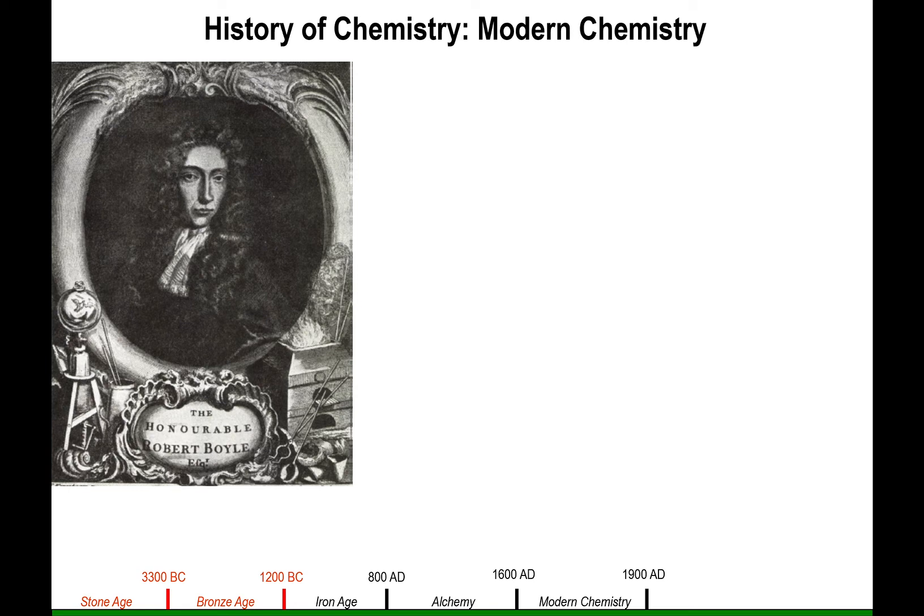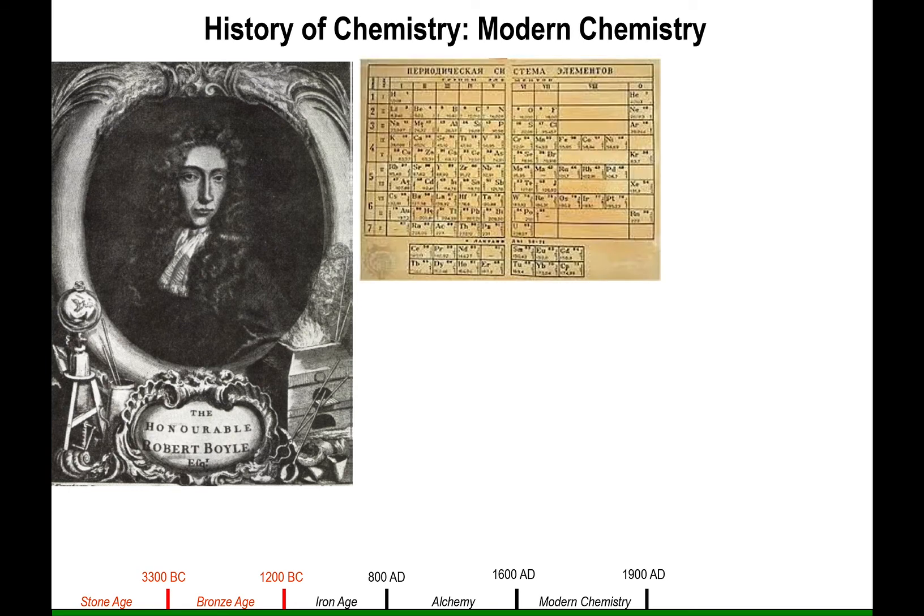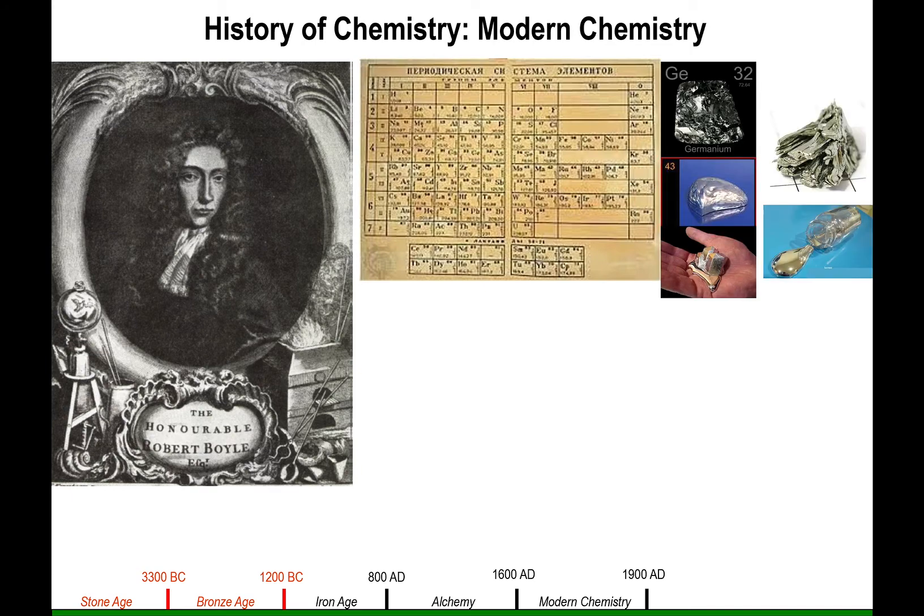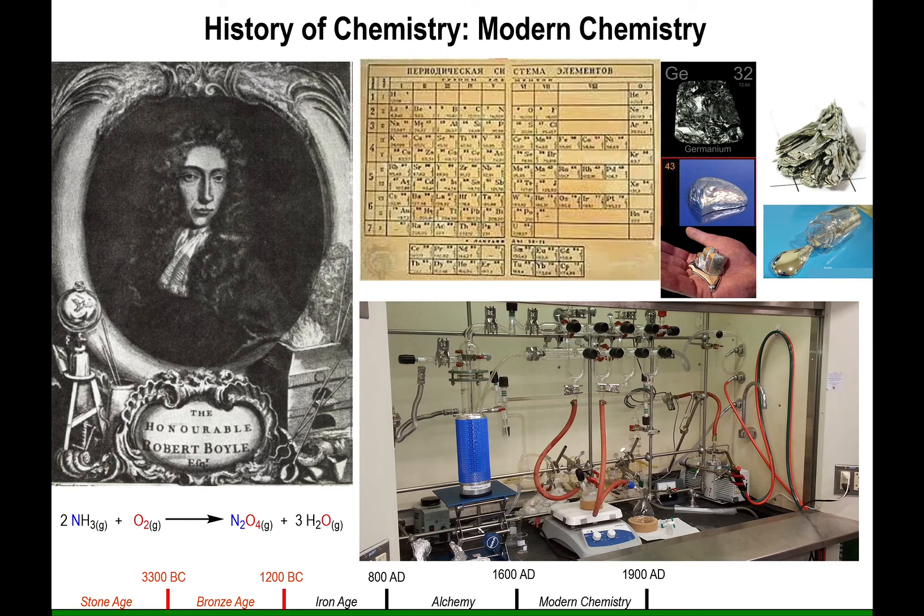When the scientific method got established, this is where a set of rules was put forward to make sure that information that is not necessary is omitted and information that may seem of importance could be actually proven to be important. When the scientific method is established, modern chemistry begins. The periodic table begins to take shape and form, elements are found, and you start creating laboratories where you can do constructive chemistry with proper understanding.